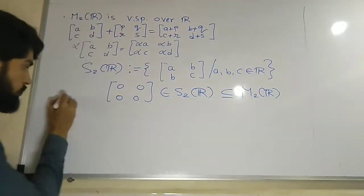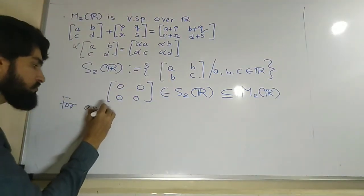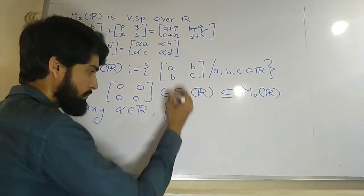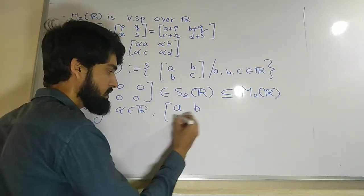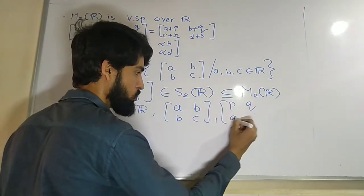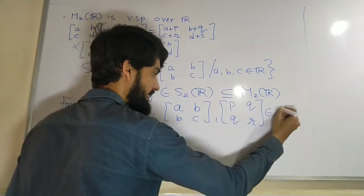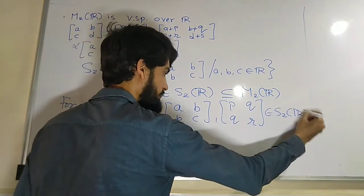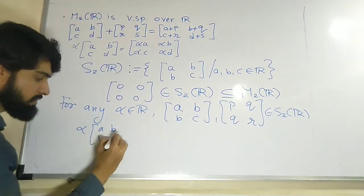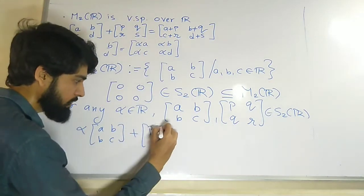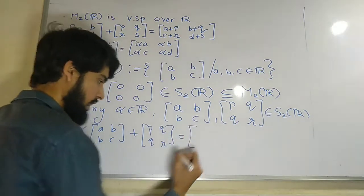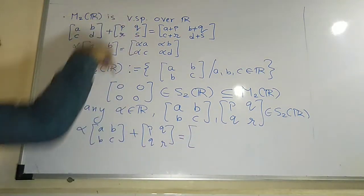So for any alpha, if I take a real number and any two symmetric matrices [a, b; b, c] and [p, q; q, r] inside S2R, and if I make their combination, that is alpha times [a, b; b, c] plus [p, q; q, r], my answer will be what after applying the operation in this manner?